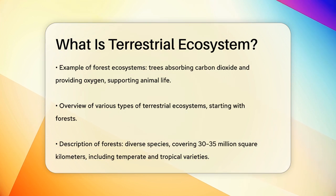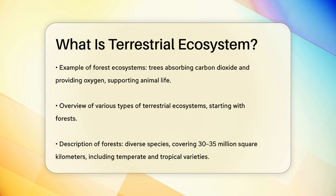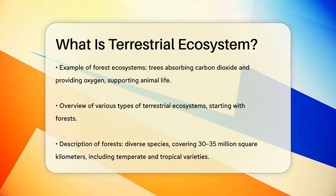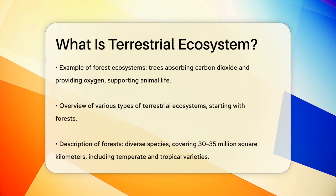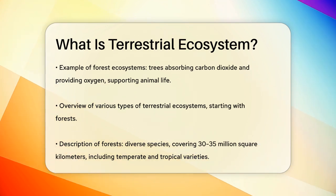There are several main types of terrestrial ecosystems, each with its own unique features. Forests are home to a vast array of species and cover about 30 to 35 million square kilometers of the earth's surface. These can range from temperate deciduous forests, where trees lose their leaves seasonally, to tropical rainforests, which are lush and green year-round.